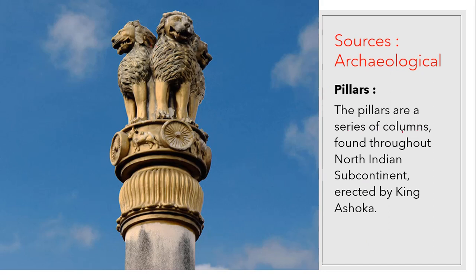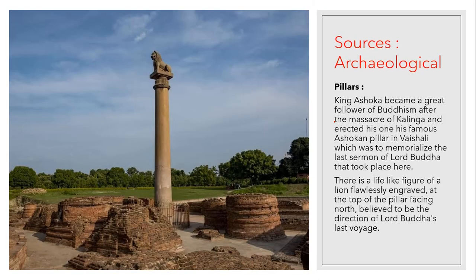The pillars are a series of columns found throughout the subcontinent, erected by Ashoka. Each pillar features a lotus base, a drum with four animals, and four lions representing bravery. King Ashoka became a great follower of Buddhism after the massacre of Kalinga. He erected one of his famous Ashokan pillars in Vaishali to memorize the last sermon of Lord Buddha — a life-like lion is flawlessly engraved at the top, facing north, believed to be the direction of Buddha's last voyage.